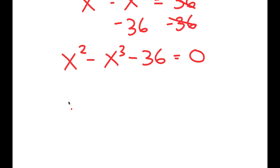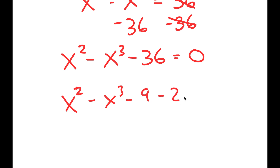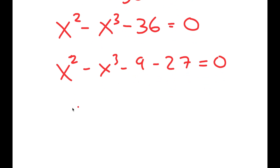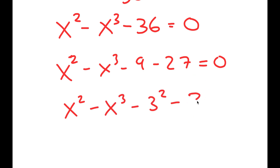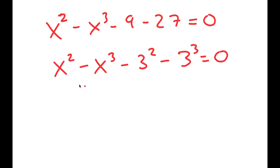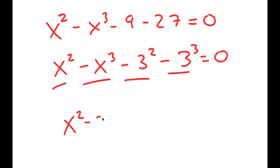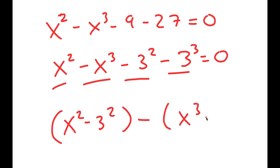Now I'm going to rewrite 36 as negative 9 minus 27. The reason is that 9 is the same thing as 3 squared, and 27 is the same thing as 3 to the power of 3. So I'm going to group together x cubed and 3 cubed, and x squared and 3 squared, giving me x squared minus 3 squared minus x cubed plus 3 cubed.